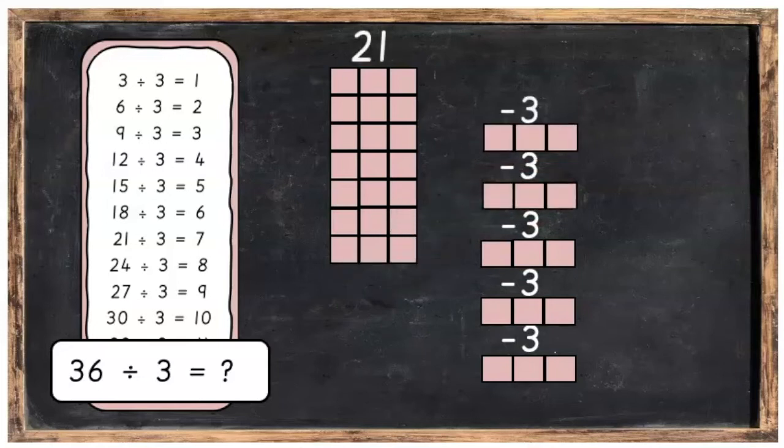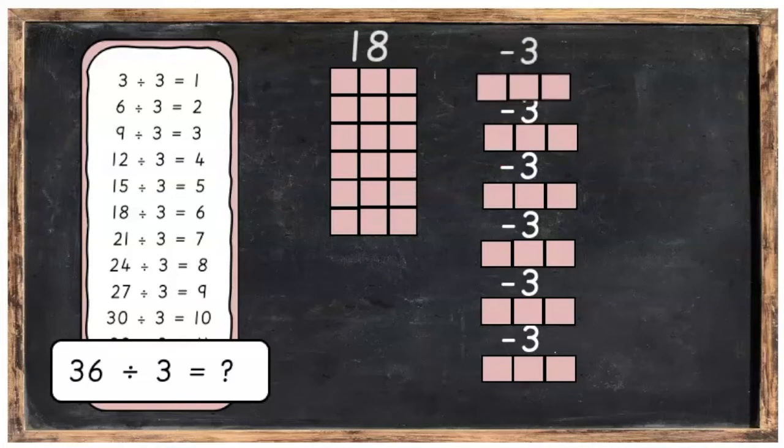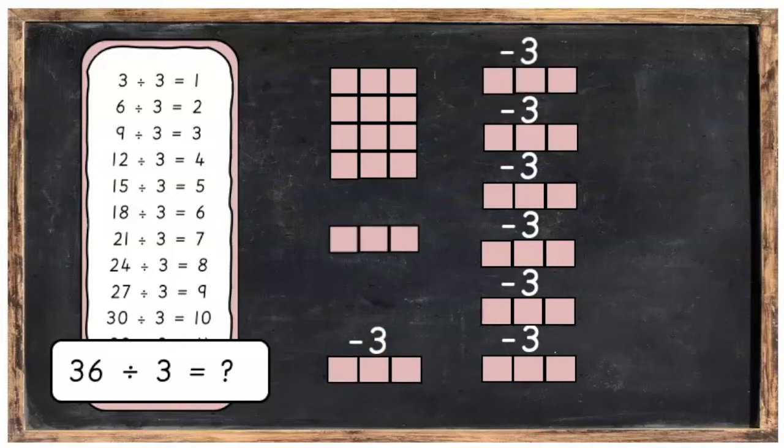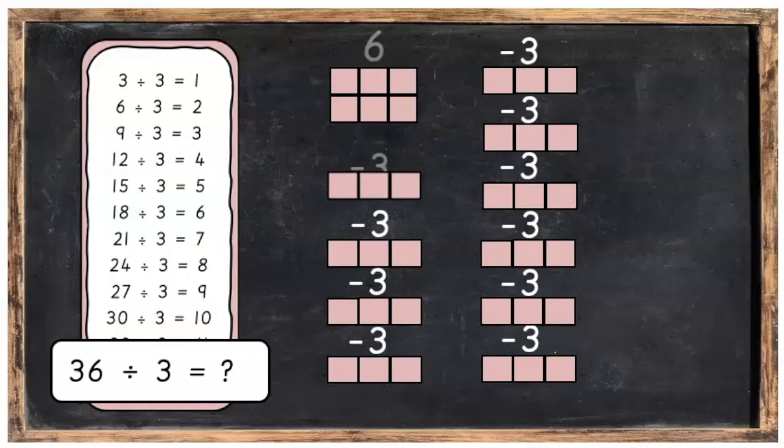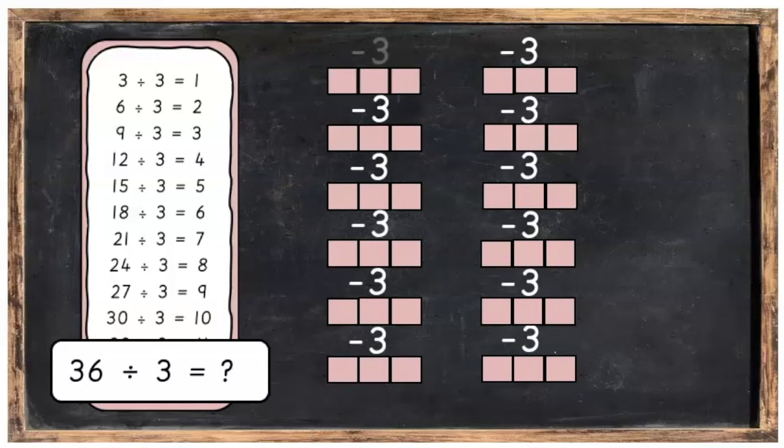Another 3, we're going to have 21 left. Another 3, we're going to have 18. Another 3, we're going to have 15. Another 3, we're going to have 12. Another 3, we're going to have 9. And then 6 left. And then 3 left all the way down to 0 until they're all gone.